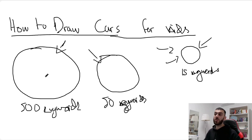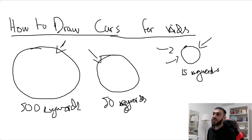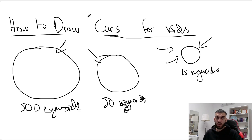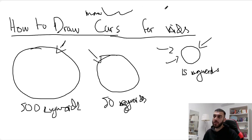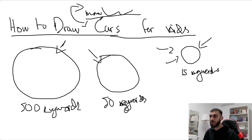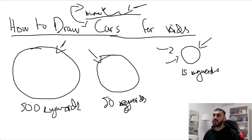We don't want to target 500 keywords. We're not trying to rank for as many keywords as possible. We're trying to teach Amazon what our book is about — that's the only purpose of keywords, especially in the first 30 days. If our book is 'how to draw cars for kids' and we don't have monster trucks in it, we're not going to target 'how to draw monster trucks for kids.' Some people might argue that monster trucks are cars, but we don't want Amazon to even think our book might be a monster truck book.